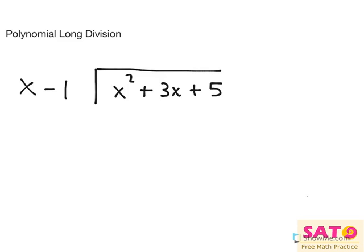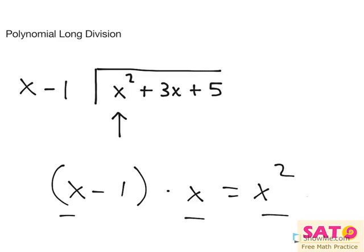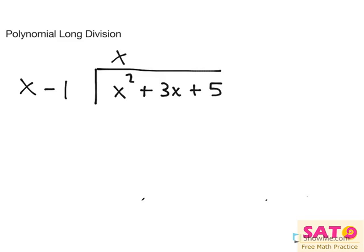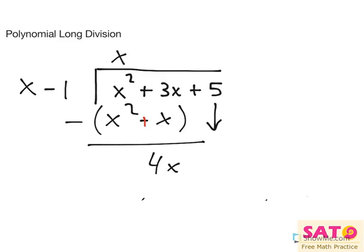The basic concept here is to find what goes into the first value here, the x degree. So let's say x minus 1 times something equals x squared, and we're only interested at the x's, so that would be x. So let's write x here, and x times x minus 1 would be x squared minus x, and we would subtract it and distribute the negative, so we would get just 4x. Now we have to bring that down and do the same thing again.